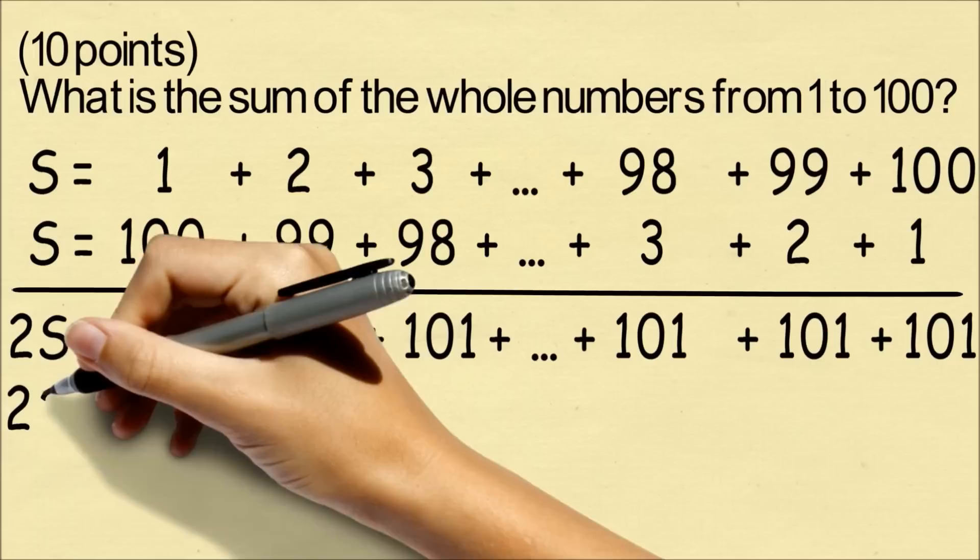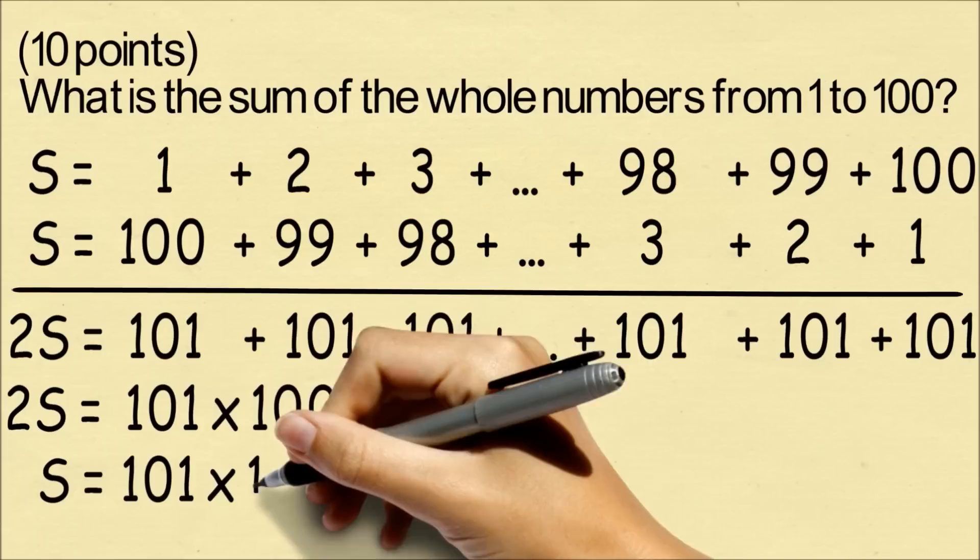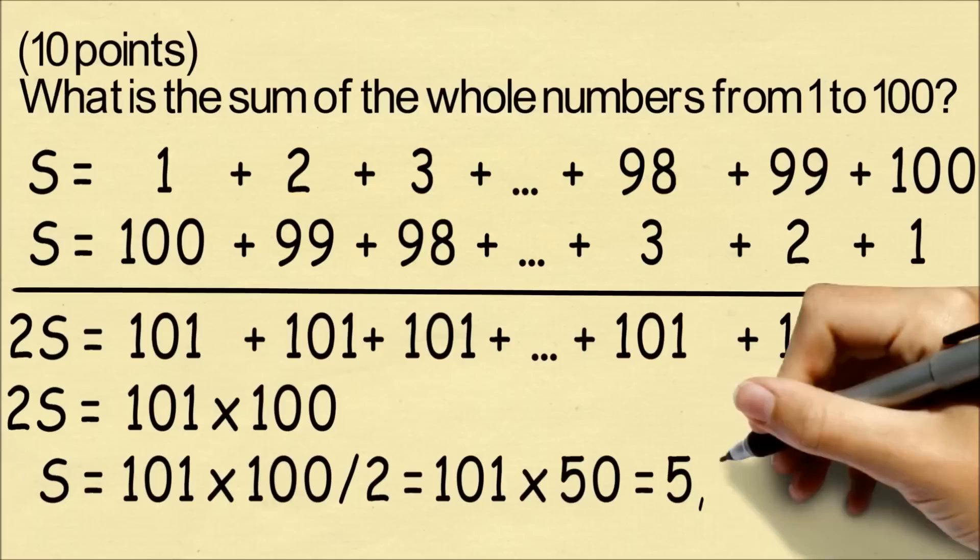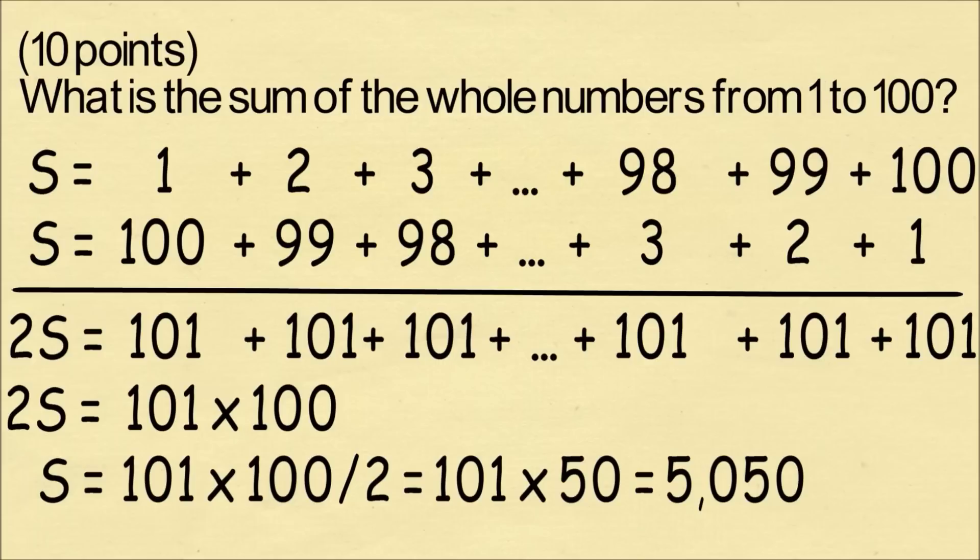Gauss has figured out something that is going to shock the world. 2 times the sum is equal to 101 times 100, because there are 100 terms. He now figures out the sum by splitting the product in half. And so the sum is 101 times 50, which is 5,050. Gauss has figured out the answer, and he has plenty of time to spare to check his answer.